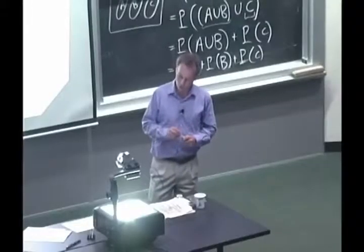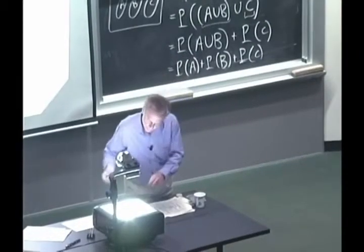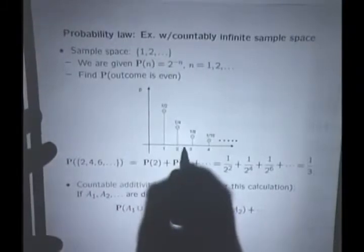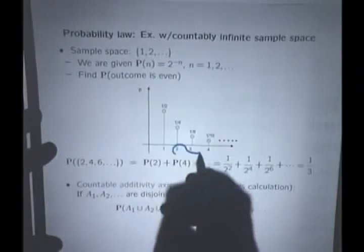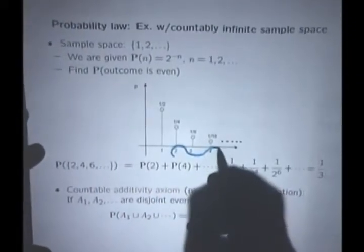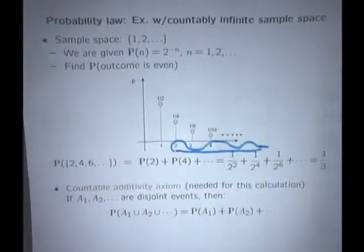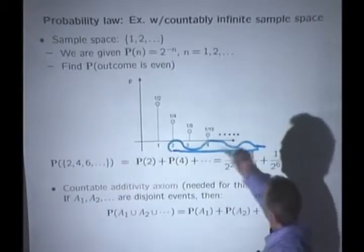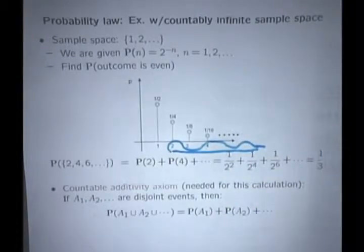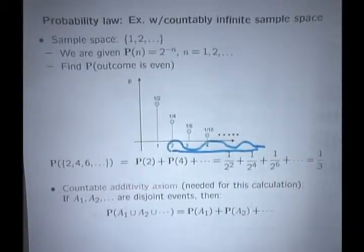And you're asked to find the probability that the outcome is an even number. How do you go about calculating that probability? So the probability of being an even number is the probability of the subset that consists of just the even numbers. So it would be a subset of this kind that includes 2, 4, and so on.